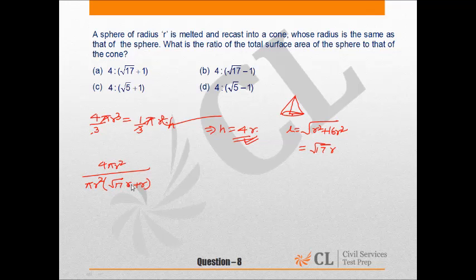R common. Here would be 1. πR², πR² cancel out. So our answer is 4 to square root 17 plus 1. Hence our answer is option A.